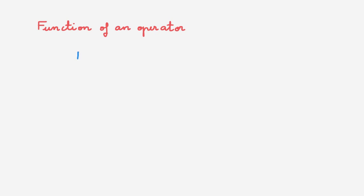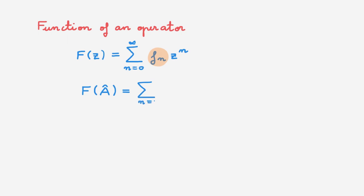We're now ready to define the function of an operator. Consider a function f of some variable z and its power series expansion, where the fn are the expansion coefficients. We next define the function f of an operator A as equal to the same power series, using the same expansion coefficients, but now with the powers of the operator A. Whenever we write a power series, there is always the question of convergence, but most functions we need in quantum mechanics are well behaved from this point of view, so convergence is a topic we don't typically have to worry about.